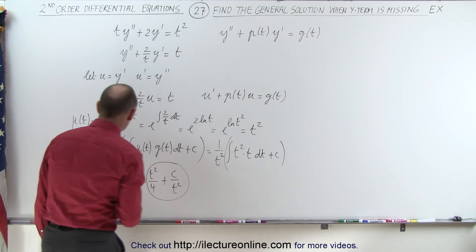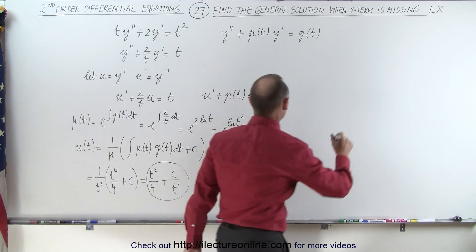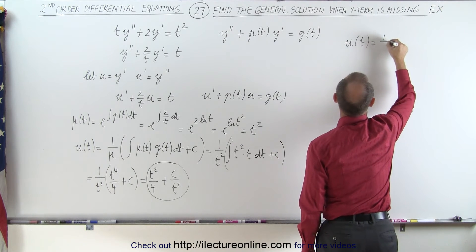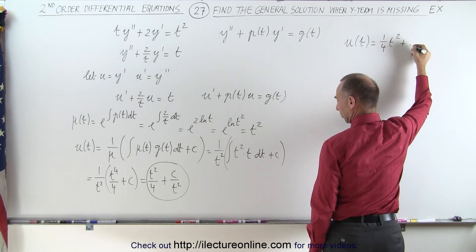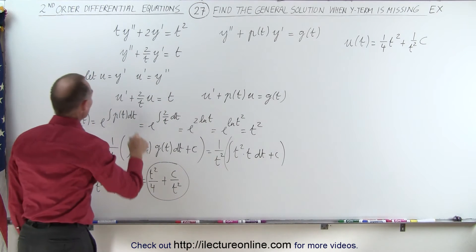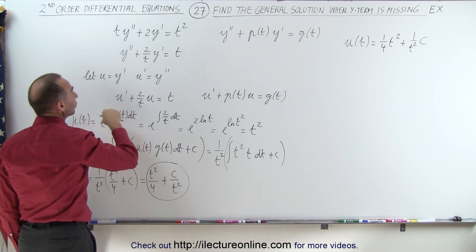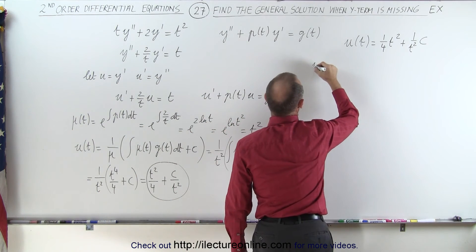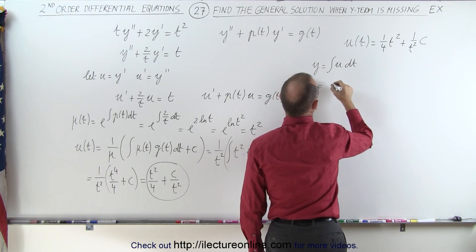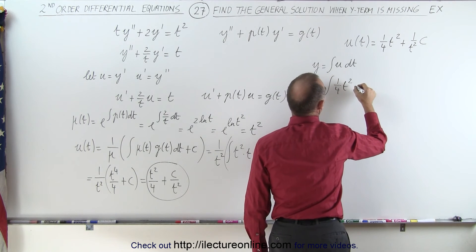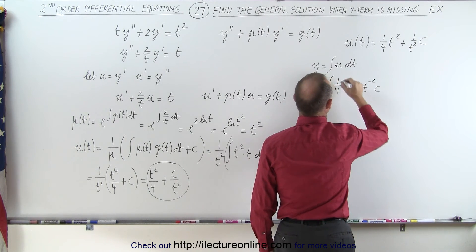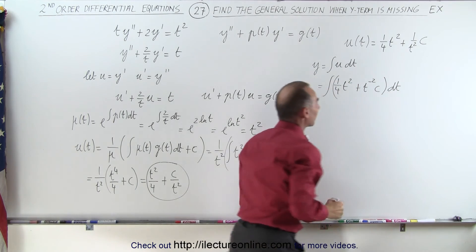And there's the general solution of u. So we have u as a function of time — that's the solution of the first order differential equation — equal to one quarter t squared plus 1 over t squared times the constant c. Now we go back and recall that we made the substitution: u is equal to y prime, which means that y is equal to the integral of u dt. So y is equal to the integral of one quarter t squared plus t to the minus 2 times c, all times dt.